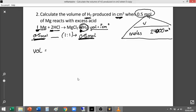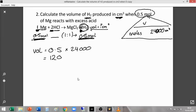To get the volume, you do the number of moles multiplied by the 24,000 centimetre cubed, the molar gas constant there. Our number of moles was 0.5 times by 24,000, and times it by 0.5 is the same as dividing by 2. So that should be really easy to work out.